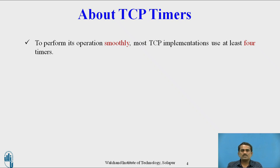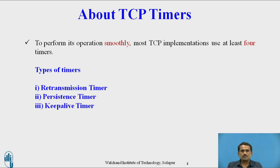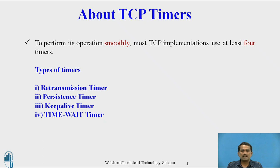To perform its operation smoothly, most TCP implementations use at least four different types of timers: the first is the retransmission timer, the second is the persistent timer, the third is the keep-alive timer, and the fourth is the time-wait timer. In this video, we will discuss the first TCP timer, that is the retransmission timer.